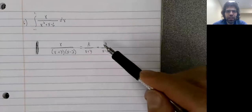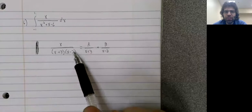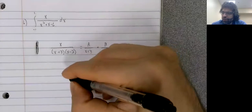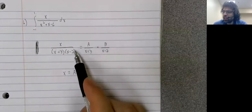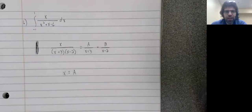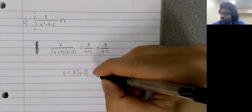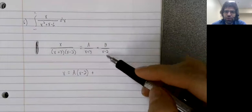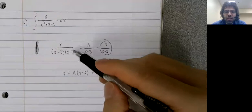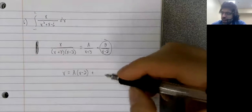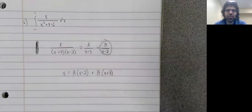And in that case it's just a constant over the first term, a constant over the second term. And to find this A and this B, we're going to multiply both sides of this equality by this denominator. On the left, we're left with x. On the right, when we multiply this fraction by this denominator, the x plus three's cancel. And we get x minus two. When we take this fraction and multiply it by this, this time it's the x minus two's that cancel. And we get B times x plus three.